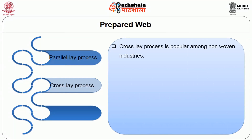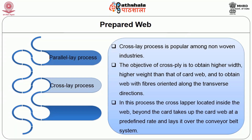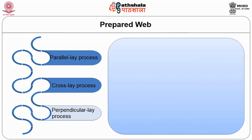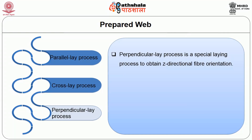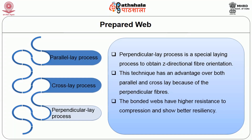The cross-lay process is popular among the nonwovens industries. The objective of cross-laying is to obtain higher width and higher weight than that of the regular card web, and to obtain a web with fibers oriented along the transverse direction. In this process, the cross-lapper located inside the web beyond the card takes up the card web at a predefined rate and lays it over the conveyor belt in the cross-wise direction. In the perpendicular-lay process, it is a special layering process to obtain fibers in the Z-directional orientation. This technique has the advantage over both the parallel and cross-lay because the bonded webs have higher resistance to compression and show better resiliency.